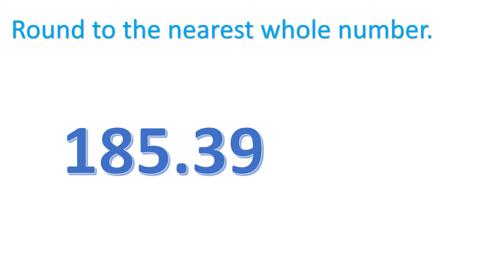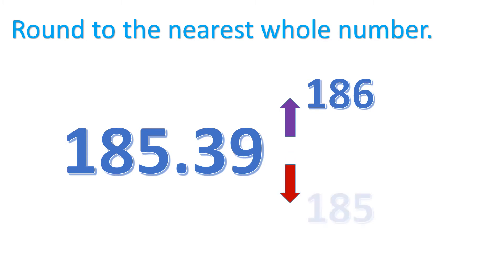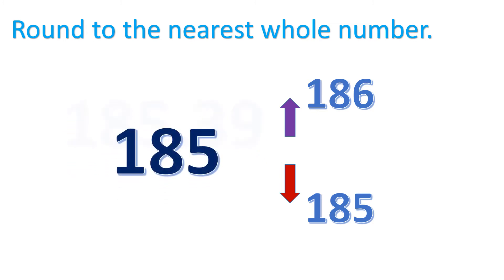Another example: 185 and 39 hundredths. We are tasked to round to the nearest whole number — so it's either we round up to 186 or we just retain or round down to 185. Since the number at the right of the ones place is 3, which is below 5, then we have to retain it or round down.